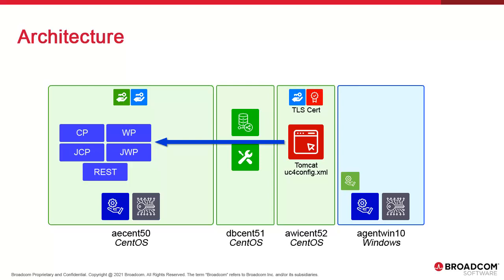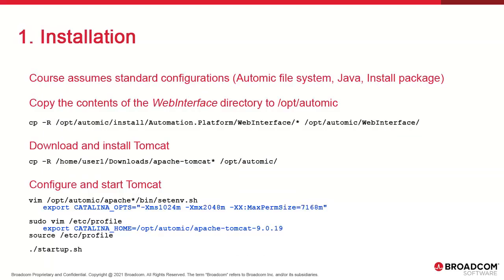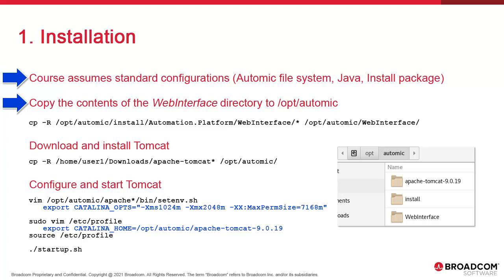We're also installing the Apache Tomcat web server. This is a brand new system. As for all components, we're assuming slash opt slash atomic has been created. Java has been configured, and the Atomic install package is available. We've also created a slash opt slash atomic slash web interface directory. We won't show any of these steps — this should be understood. We're going to copy the contents of the web interface directory from the install package to the web interface directory in the Atomic file system.